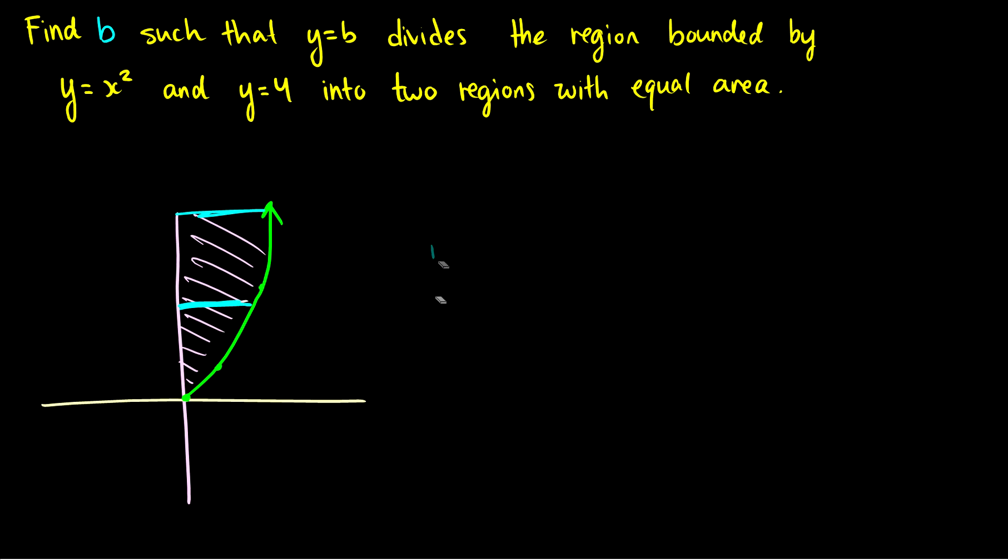So we want to find some line y equals b that we split this area into two equal parts. So let's make this as a function of y. So essentially we have that x is equal to the square root of y.